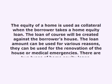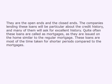There are two types of home equity loans: the open-end and the closed-end. The companies lending these loans will be particular about the credit history, and many of them will ask for excellent history. Quite often these loans are called mortgages, as they are issued on the home similar to a regular mortgage, but they are most often taken for shorter periods compared to mortgages.